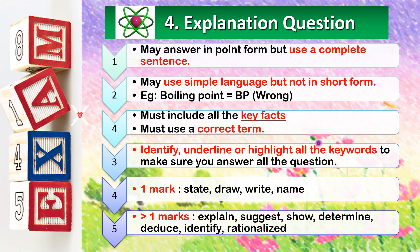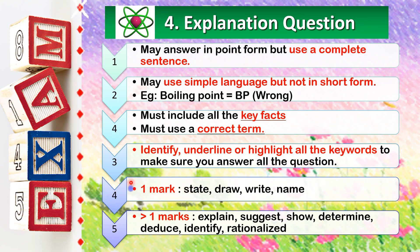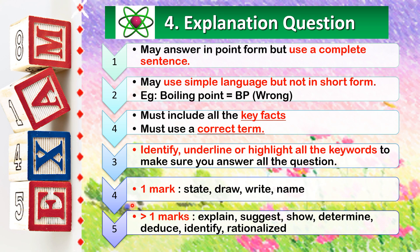Here are the correct techniques to answer explanation type questions. You may answer in point form but please use complete sentences. You can use simple language but not abbreviations. Your explanation must include all the key facts with the correct terms. Identify, underline, or highlight all the key words to make sure you answer all parts of the question. Usually one mark is given if the question asks you to state, draw, write, or name. However, if the question asks you to explain, suggest, show, determine, deduce, identify, or rationalize, the mark given will be more than one mark.